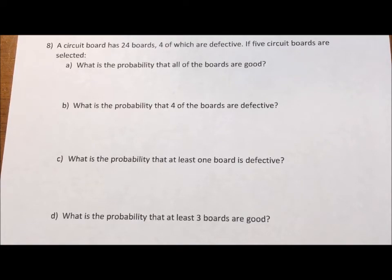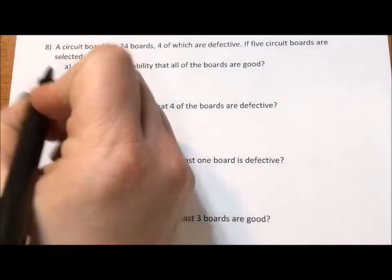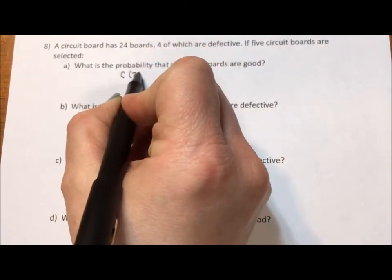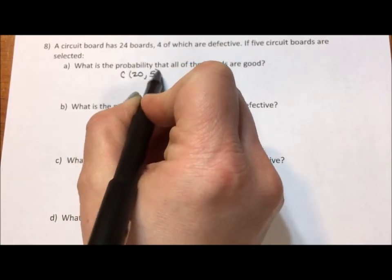So part over whole. If we're selecting circuit boards and all things being equal, once the five are selected, it doesn't matter the order in which you selected them. We are just randomly selecting. That means if order doesn't matter, we use combination.